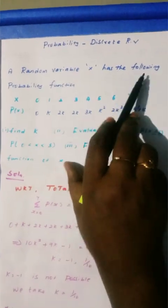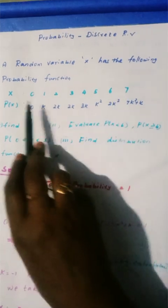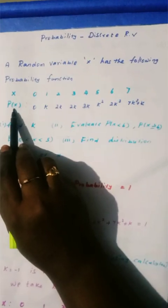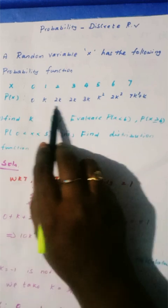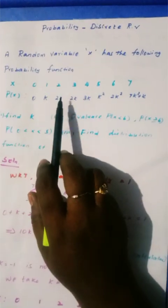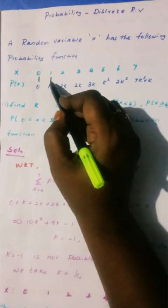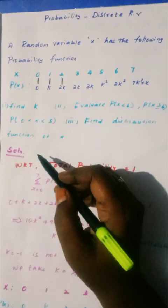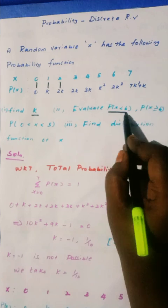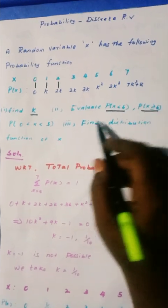Random variable x has the following probability function. The x value goes up to 7, starting from 0. P of x gives the probability mass function value — the corresponding value for each x. In the first question, we will check the discrete case and find the constant k, with conditions like P(x less than 6) and greater than or equal to 6, which involves the distribution function.